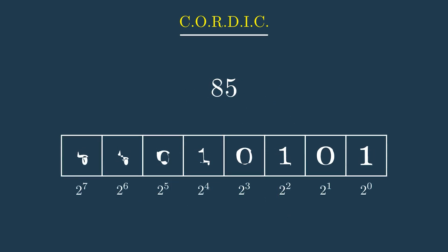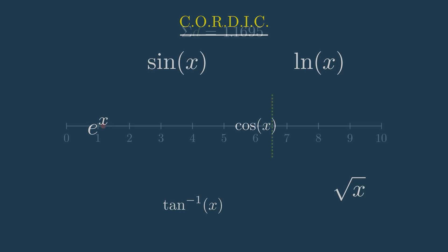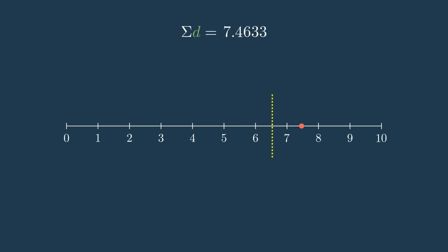Plus, besides sine, cosine, and inverse tangent, variations of this algorithm can be used to calculate things like square roots, natural algorithms, and exponentials. I think the coolest part about this algorithm is how far you can get just by starting from a simple idea, like walking back and forth on a line. Thanks for watching. See you next time.